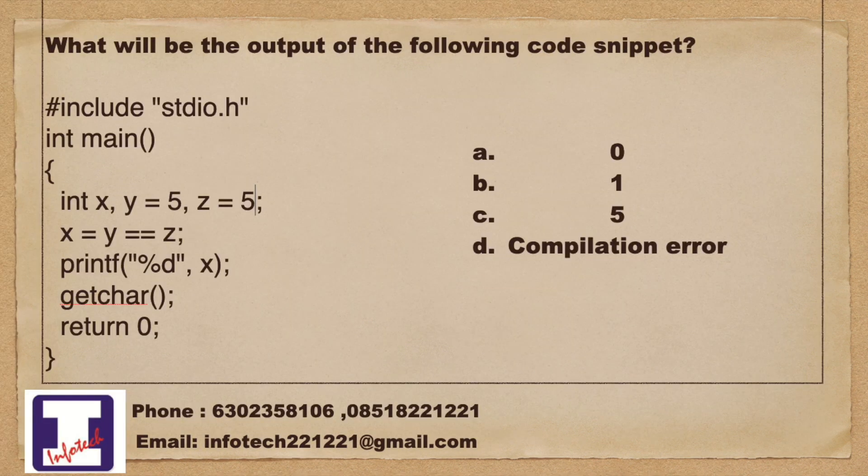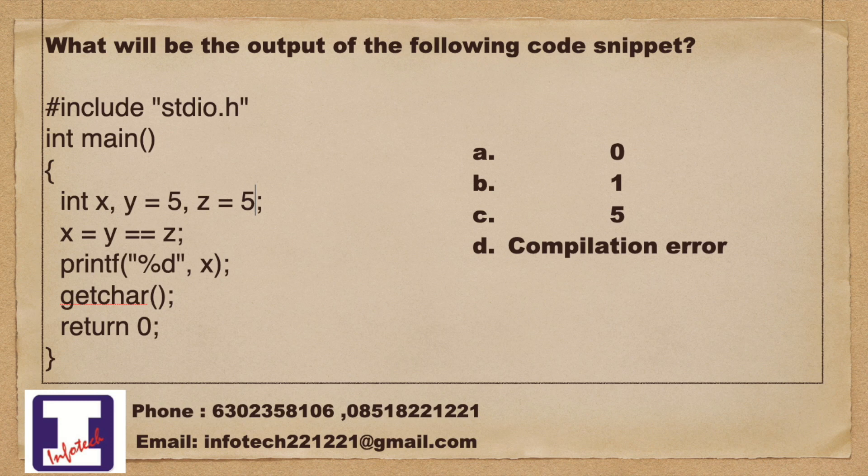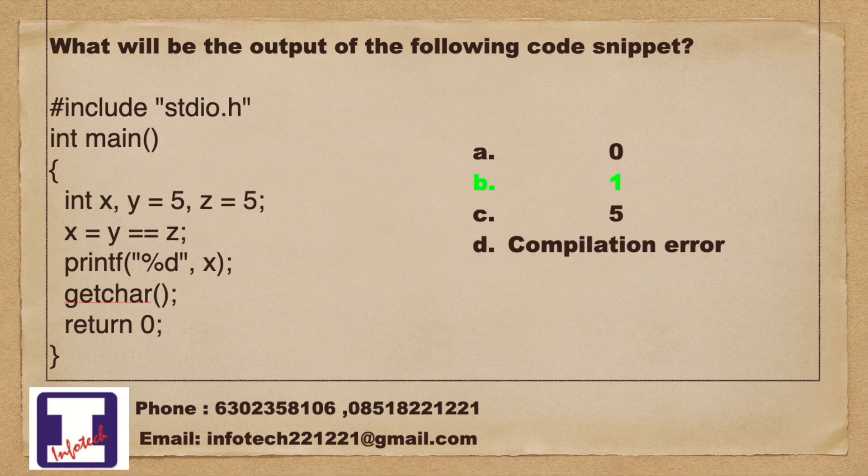What is the output of the following code snippet? Option a. 0, Option b. 1, Option c. 5, Option d. Compilation error. And the answer is option b. 1.